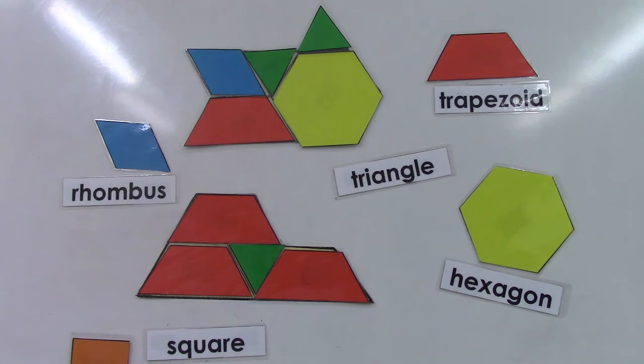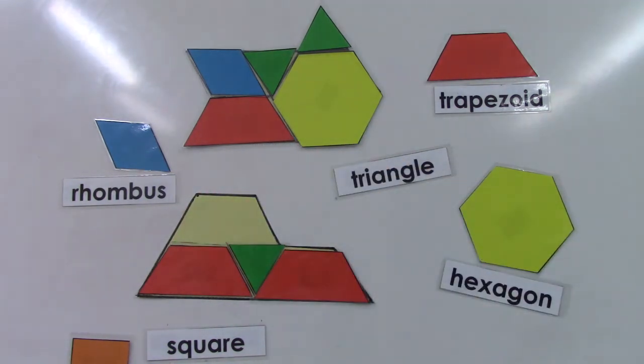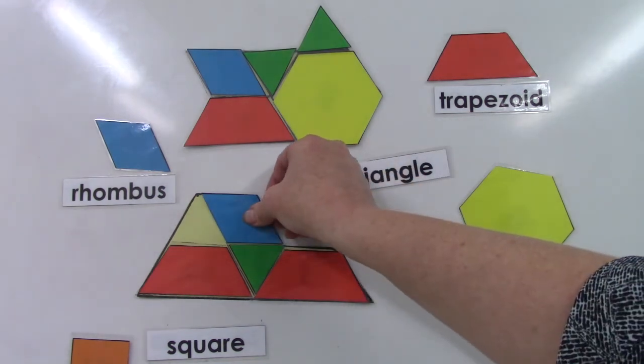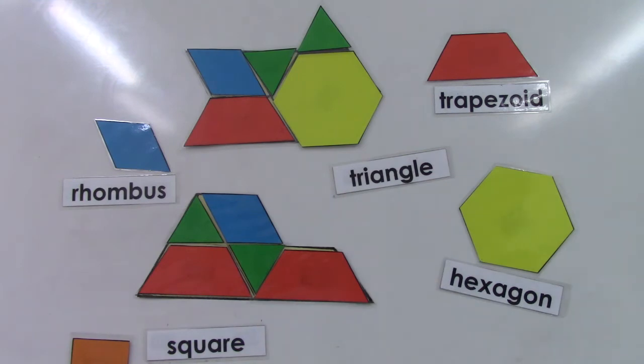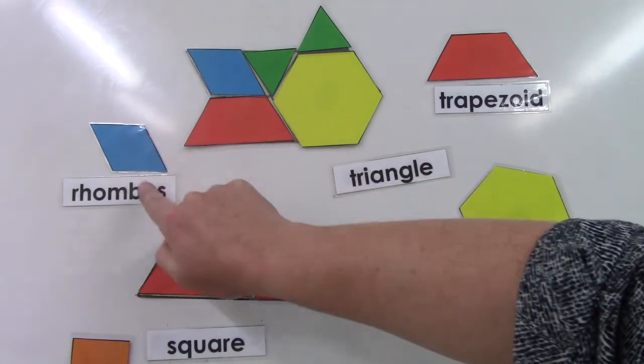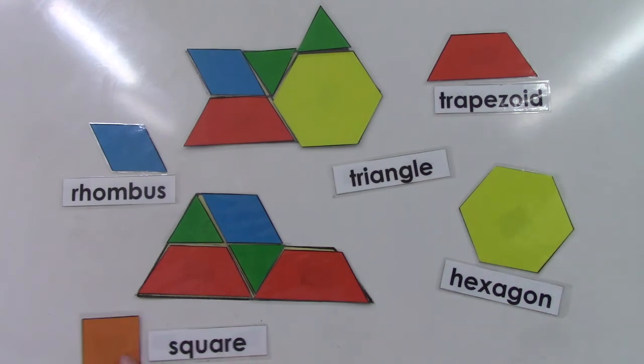I bet that you could think of a lot of different ways to cover this design. Like maybe in this area you didn't see a trapezoid. Maybe you saw that a rhombus and a triangle would fit there. There's so many different ways to do it. It's a lot of fun to play with our pattern blocks. Our pattern blocks come in the shape of rhombus, trapezoid, triangle, hexagon, and square.